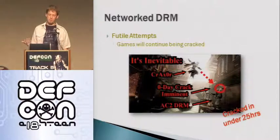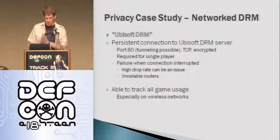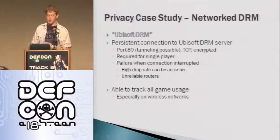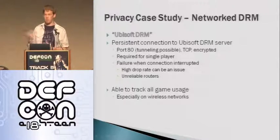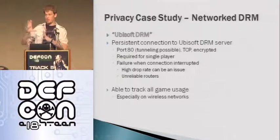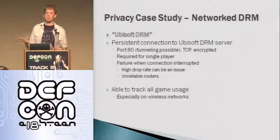Now from a publishers' perspective, what's the next step? But first, let's get into the privacy impacts. The Ubisoft DRM is the most stringent of these DRMs. When you look at the network traffic going on when you run one of those Ubisoft games, it has a TCP connection that's encrypted over port 80 or any other tunneled port — it does a fair attempt of trying to get out. It's also required for single player. What this actually means is that you have the ability to track all game usage at this point. You have this data stream going back and forth, and you can measure when the data stream stops — then you know that whoever was playing stopped. This is especially applicable for wireless networks.